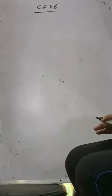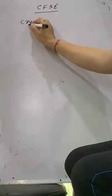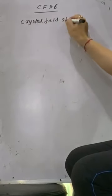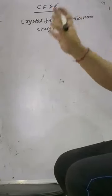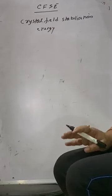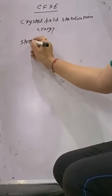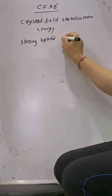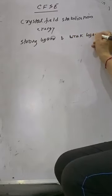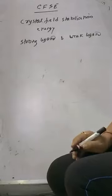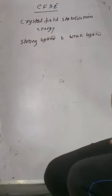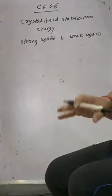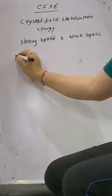Today we are starting with CFSE, that is Crystal Field Stabilization Energy. This requires a lot of information, reported on the basis of strong ligands and weak ligands. Strong ligands are those in which pairing of unpaired electrons takes place. Weak ligands are those in which pairing of unpaired electrons does not take place.